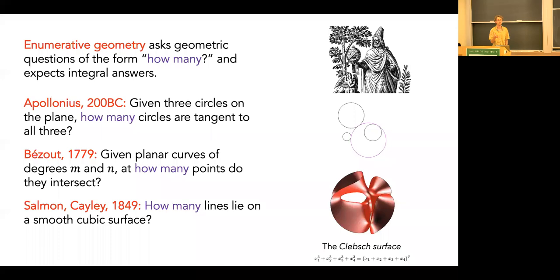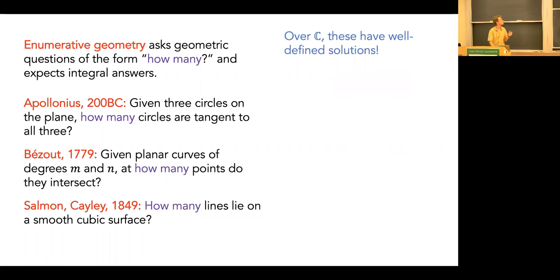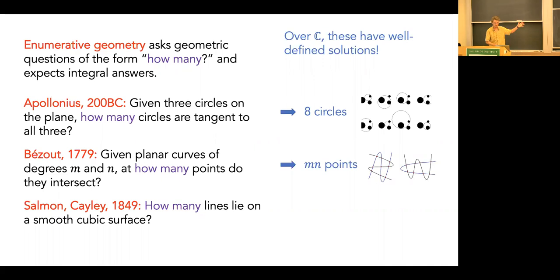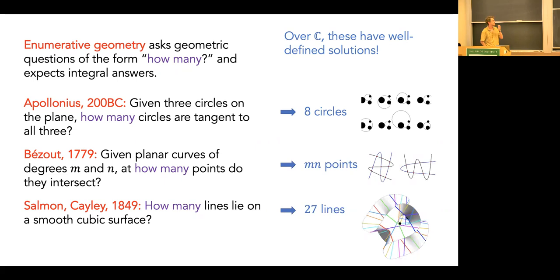When I say cubic surface, I mean we're in CP3 with four coordinates, looking at the vanishing locus of a degree-three homogeneous polynomial. The question of how many lines — geometrically we're asking: can you walk along the surface tracing a straight line through space? Algebraically: how many equations for lines remain valid when plugged into the cubic? Over the complex numbers all of these have well-defined solutions. For Apollonius there are eight tangent circles; by Bezout's theorem there are m times n intersection points counted with multiplicity; and there are 27 lines on a smooth cubic surface. Here we see the Clebsch surface, where you can actually visualize all 27 lines.